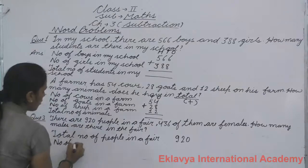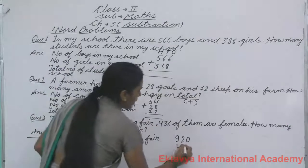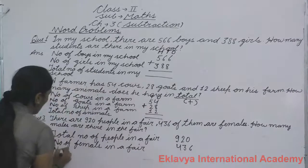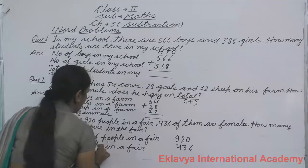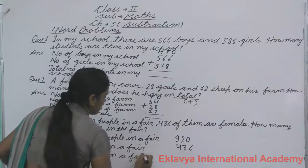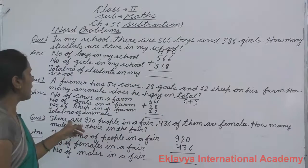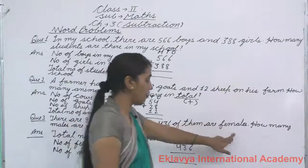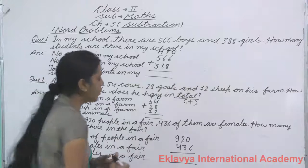Number of females: 436 in the farm. And number of males in the farm. There are 920 people, of whom 436 are female, and the rest will be male. So what will we do in this question? We will do subtraction.